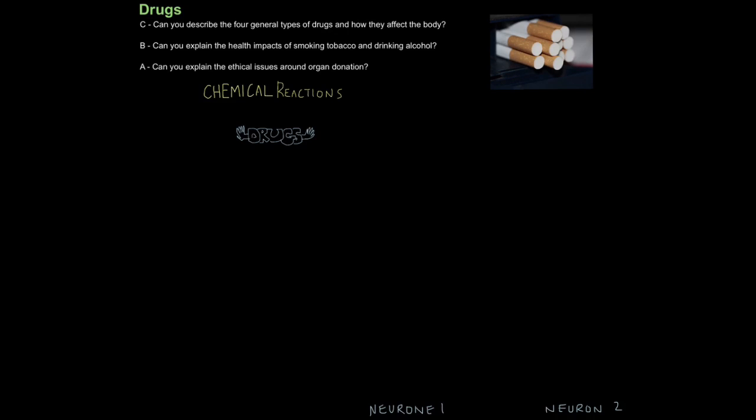In this tutorial we're going to look at the scientific field of drugs. The first aim is can you describe the four general types of drugs and how they affect the body? Then can you explain the health impacts of smoking tobacco and drinking alcohol? And finally, can you explain the ethical issues around organ donation?